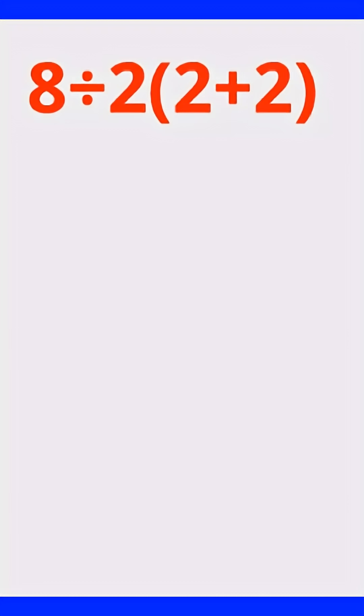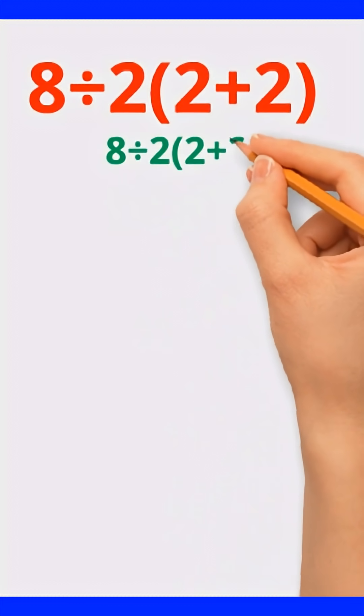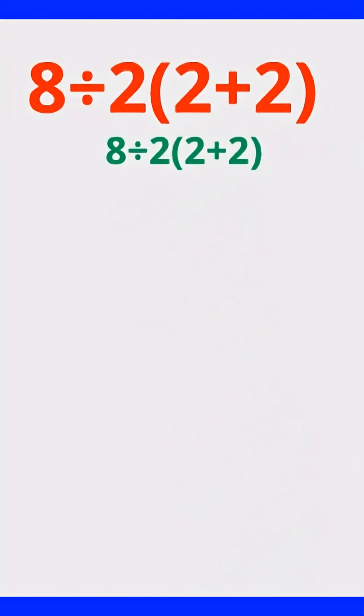Before I explain, say your answer out loud and stick with it. 8 divided by 2 times open bracket 2 plus 2 close bracket. What do you get? Pause the video and work it out.